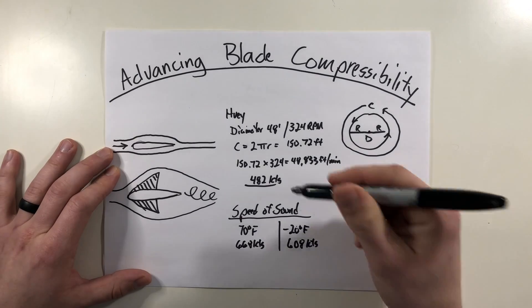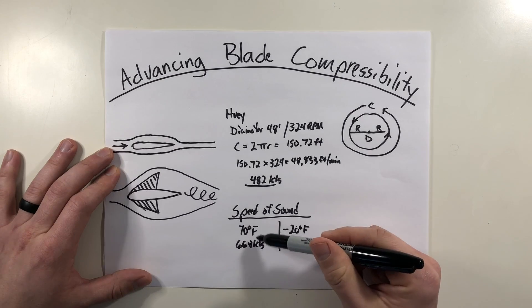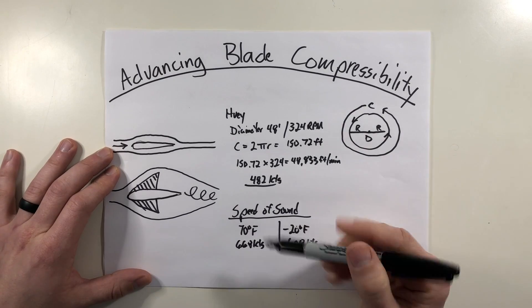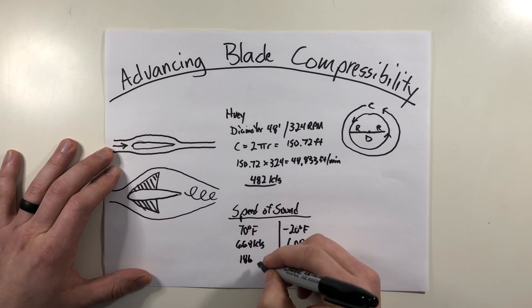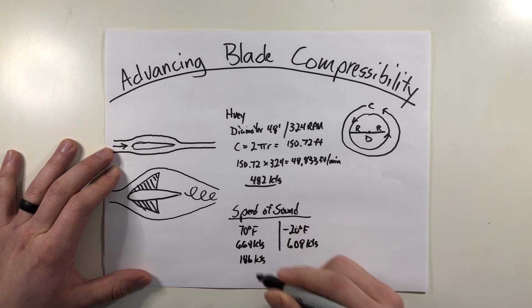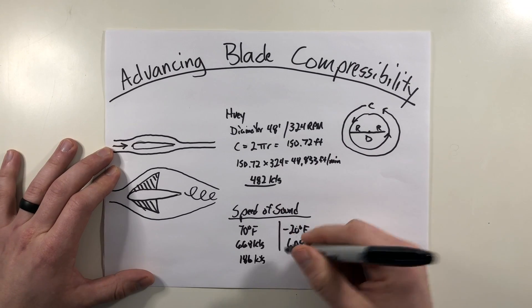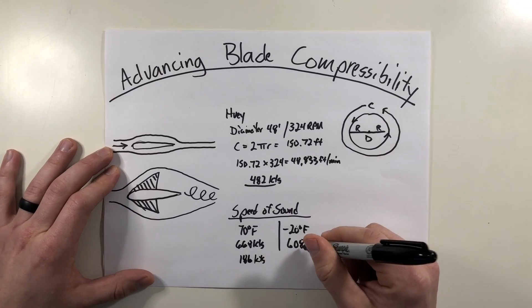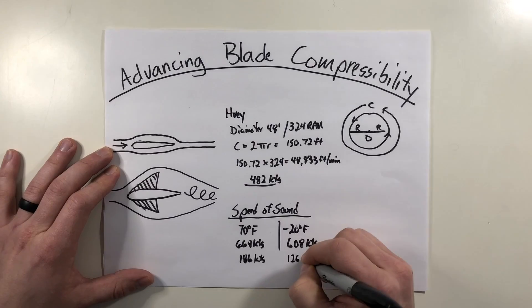So the difference between the speed of sound at 70 degrees, the 668 minus the 482, it's going to be a difference of 186 knots. So I got to be traveling at 186 knots before my advancing blade can start to approach the speed of sound. But if I'm looking at the cold temperatures minus 20, I got this 608 minus the 482 gives it about 126 knots.